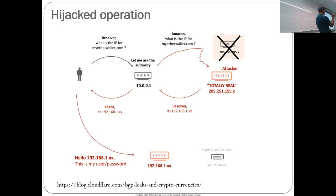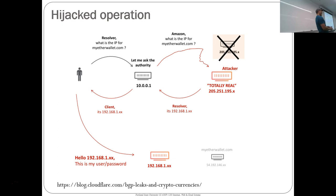If you knew what the legitimate mapping was and then got this new mapping, you'd be able to tell. And socially, the original site operators would notice no one has used their site today. If they have good site reliability engineers, they'd flag that they got no requests in the last minute. But by the time they can actually do something about it, there would already be a bunch of people who went to that site.